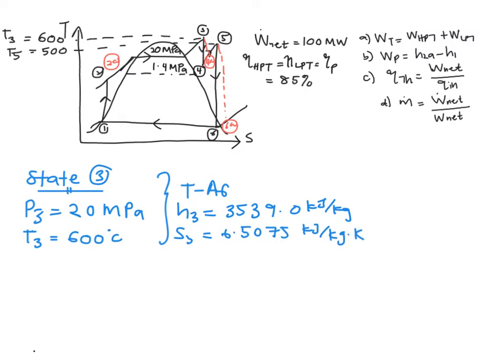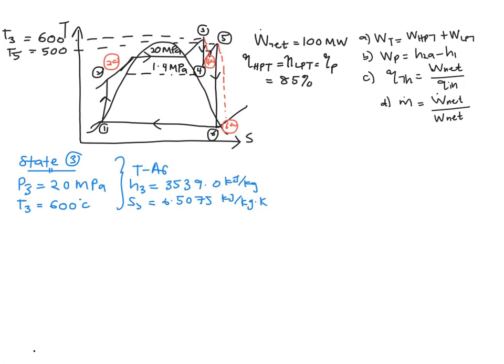Now let us move to solving for state 4, which is given where pressure 4 equals 1.4 MPa. And because S4 equals S3, which is equal to 6.5075 kJ per kg·kelvin.